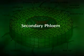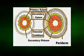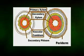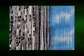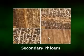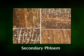Now, the secondary phloem. The secondary phloem is derived from the vascular cambium and is composed of axial and radial systems of cells. The axial system is made up of conducting cells, associated parenchyma cells, companion cells in angiosperms, and phloem fibers. The radial system consists of phloem rays that are continuous with rays in the secondary xylem.